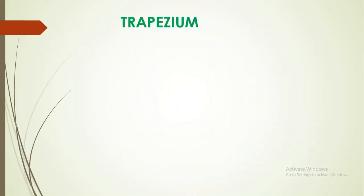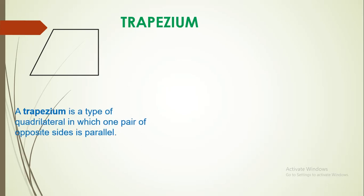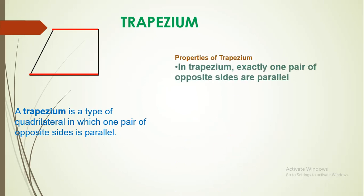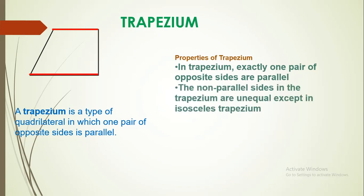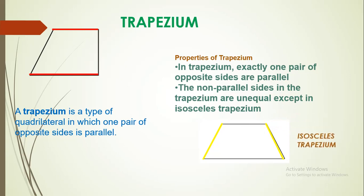First, Trapezium. A Trapezium is a type of quadrilateral in which one pair of opposite sides is parallel. Look at this — the side in red color and the opposite side are both parallel. The other two sides in black are not parallel. In Trapezium, exactly one pair of opposite sides are parallel, and the non-parallel sides may or may not be equal. If they are equal, it is called an isosceles Trapezium.